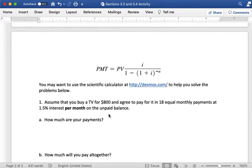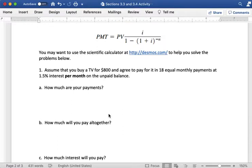So question one says, assume that you buy a TV for $800 and agree to pay for it in 18 equal monthly payments at 1.5% interest per month. So this problem is a little bit different from the other problems that we've done because we have a monthly interest rate. So this is not 1.5% annual interest compounded monthly, this is 1.5% interest per month.